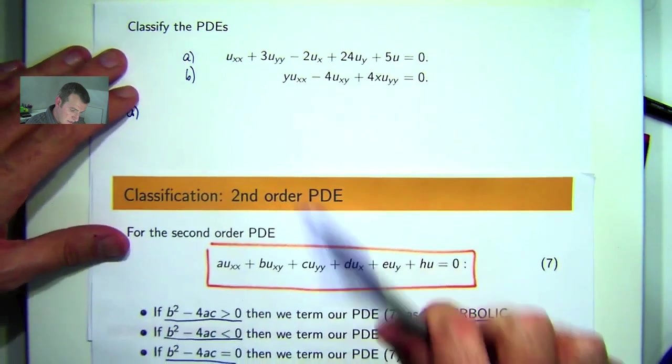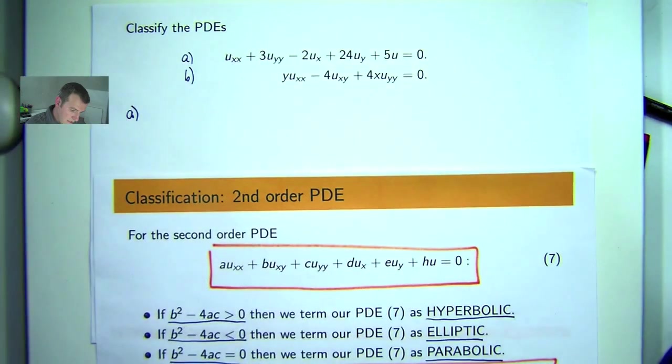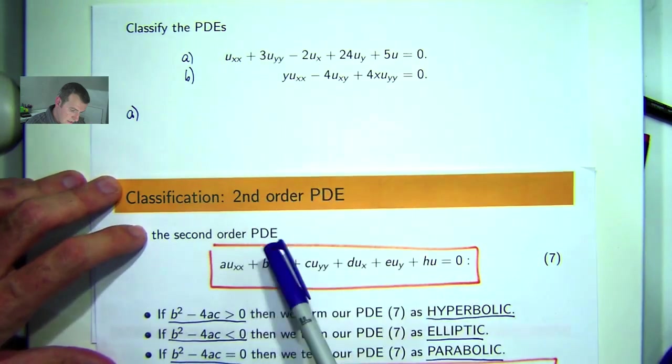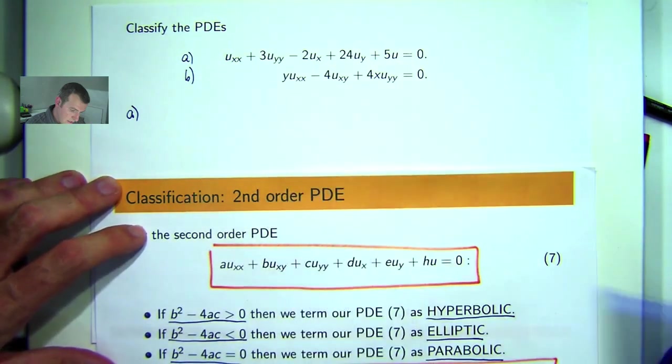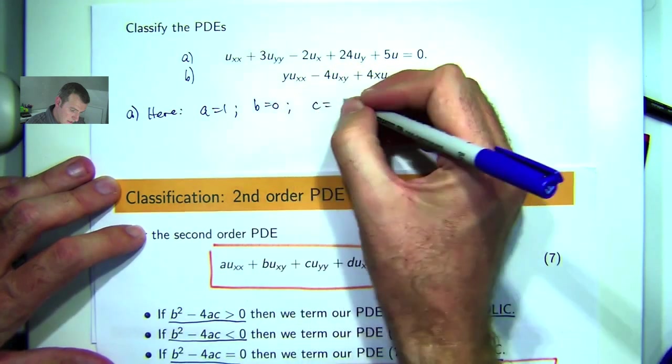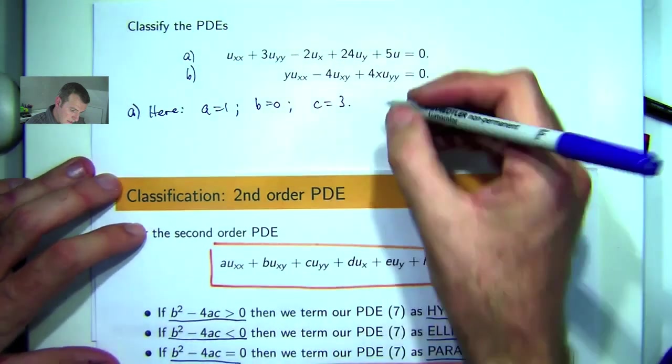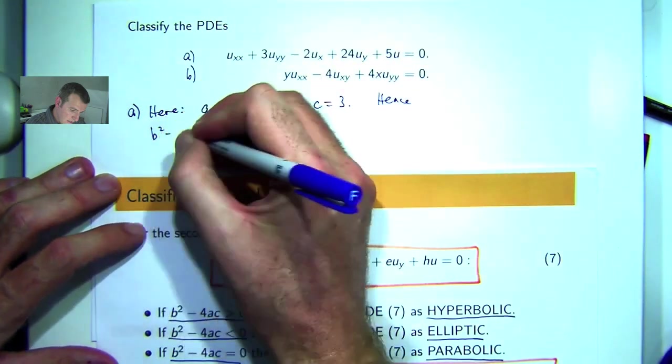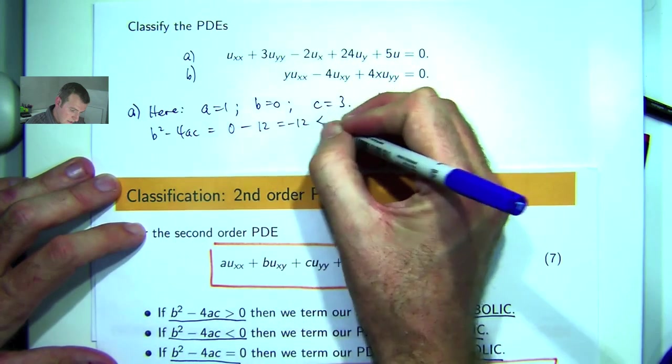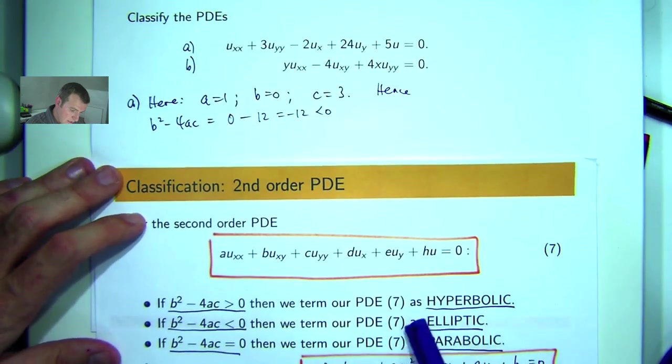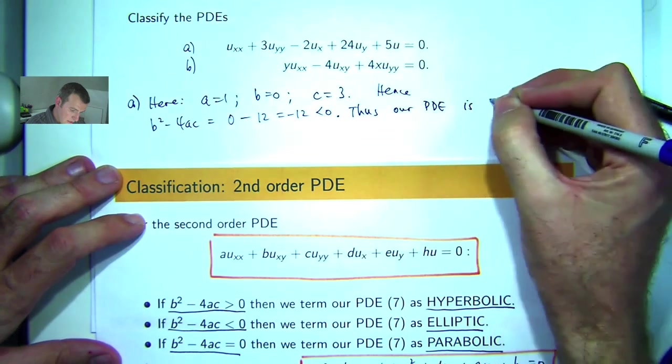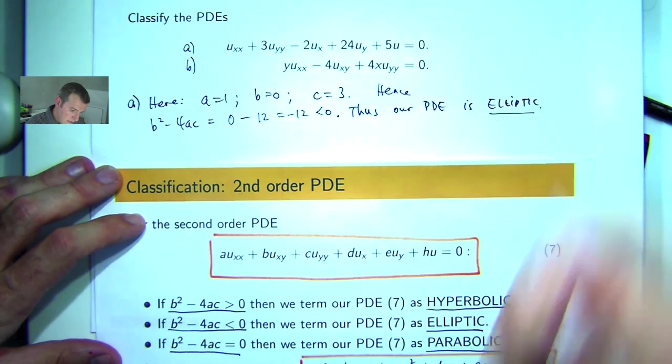Alright, so if we compare this PDE with equation seven, all we're really interested in is a, b and c. We don't really care about the other terms. So a is 1, b is 0 because there's no mixed derivative term there, and c equals positive 3. So let's test our discriminant. 0 minus 4 times that times that, so negative 12 is negative and therefore our PDE is elliptic everywhere.